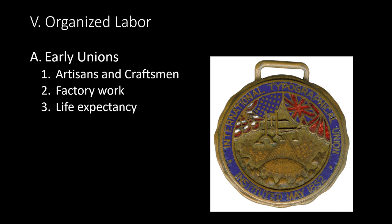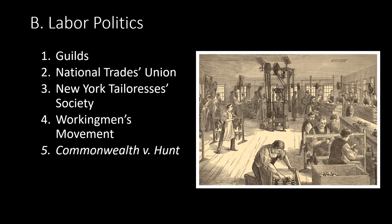In 1800, only 12 percent of American workers worked for wages; by 1860 that had grown to 40 percent, often at the expense of skilled self-employed artisans and craftsmen who could not compete with the lower prices of factory-made products. For example, shoe shops were displaced by factories; the master shoemaker would become a manager rather than an artisan. In 1850, the Board of Health in Lynn, Massachusetts reported that the life expectancy of a shoe worker was 20 years shorter than that of a farmer. Workers responded by forming trade associations — the first types of labor unions — representing their individual skills or trades.